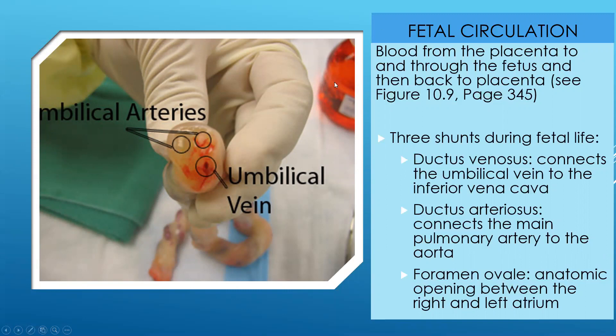Fetal circulation is different, as I've already explained. There are three shunts that are happening inside the fetus that have to close up after the umbilical cord is no longer functioning — once the placenta has come off the wall of the uterus and the baby has been born.